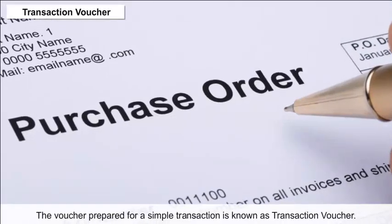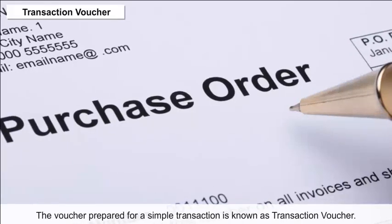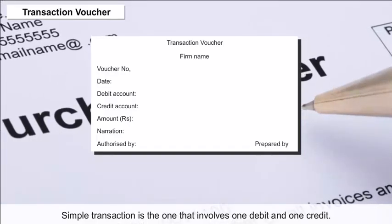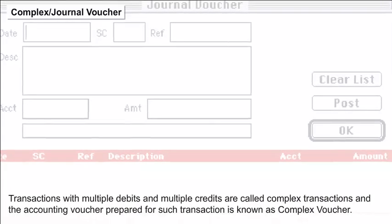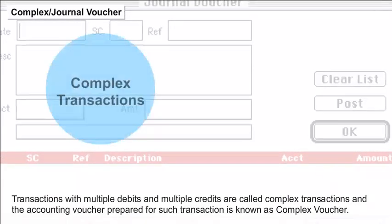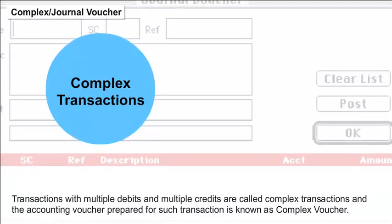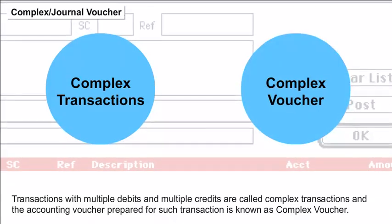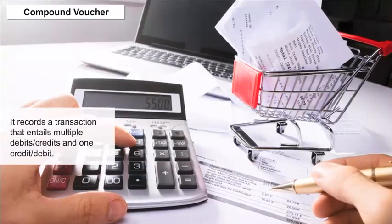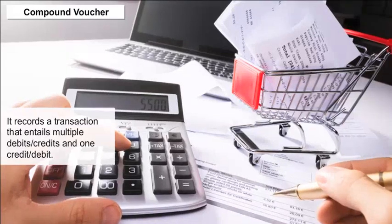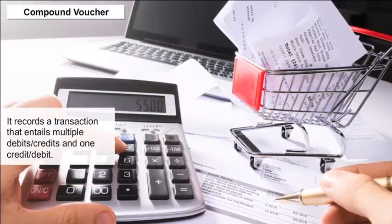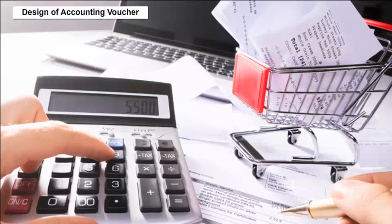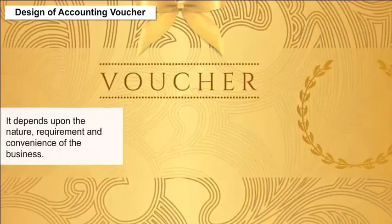The accounting voucher prepared for a simple transaction — one that involves one debit and one credit — is known as a transaction voucher. Transactions with multiple debits and multiple credits are called complex transactions, and the voucher prepared for such a transaction is known as a complex voucher or journal voucher. A compound voucher records a transaction that entails multiple debits or credits and one credit or debit, and its types are debit voucher and credit voucher.